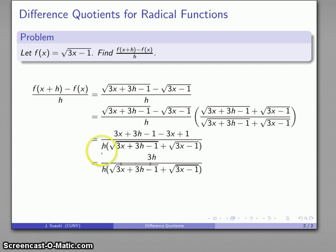And once again, there's an h in the numerator, h in the denominator. And I can cancel them as long as I add in the qualifier that says h cannot be equal to 0. So I'll go ahead and do that. And there's my simplified form of the difference quotient for this radical function.